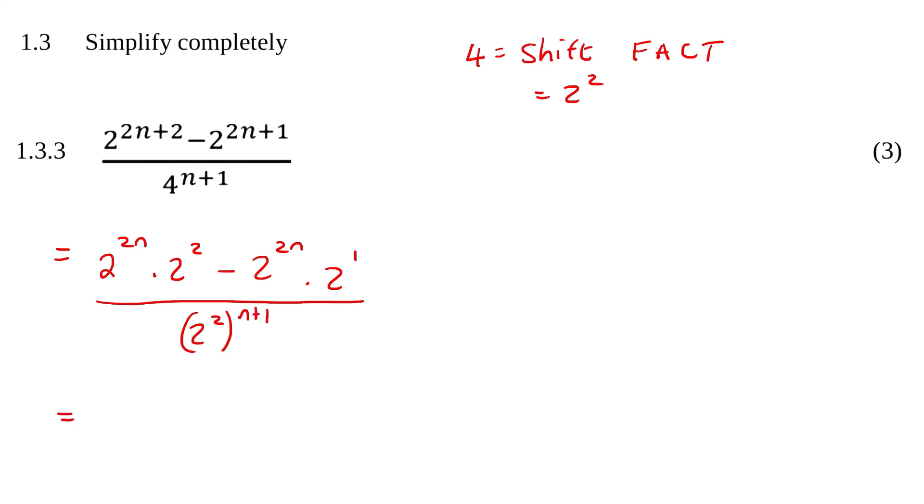And then at the top, we could take out a common factor of 2 to the power of 2n. So if we take out a 2 to the 2n as a common factor, then what are we going to be left with? Well, in the first term we're going to be left with 2 to the power of 2, and then in the second term we're going to be left with 2 to the power of 1.